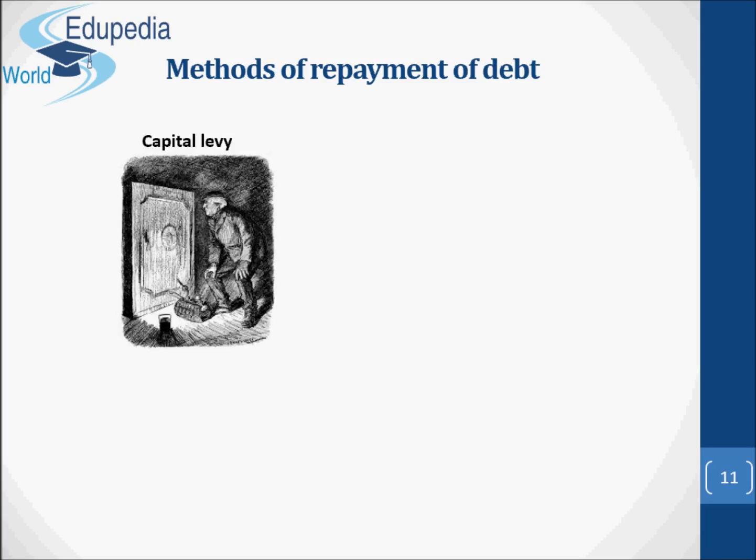Fifth, capital levy. Capital levy is a special type of once-for-all tax on capital imposed to repay war debts. All capital goods are taxed above a minimum level of assets possessed by residents of the country. Simply, capital levy refers to a very heavy tax on property and wealth. This tax was levied immediately after the First World War and has been advocated by economists like David Ricardo, Pigou and Dalton. Professor Dalton suggested capital levy as a method of debt redemption with least real burden on society, and it is useful on account of its deflationary character.